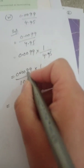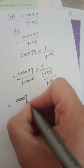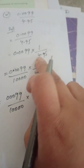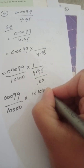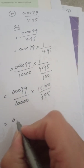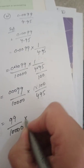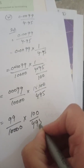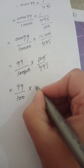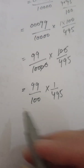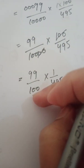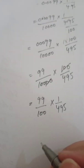We convert 0.0099: four digits after the decimal point means four zeros, giving 99 upon 10,000. For 4.95: two digits after the point means two zeros, giving 495 upon 100. So we have 99 upon 10,000 multiplied by 100 upon 495. The two zeros cancel, giving 99 upon 100 multiplied by 1 upon 495.